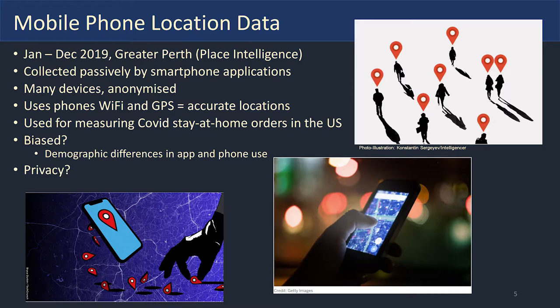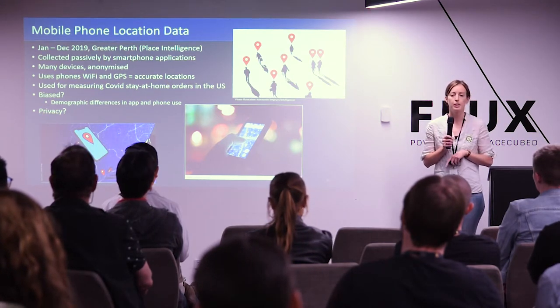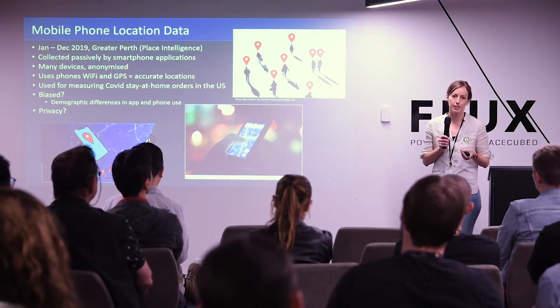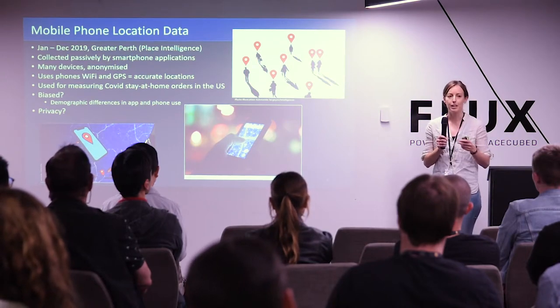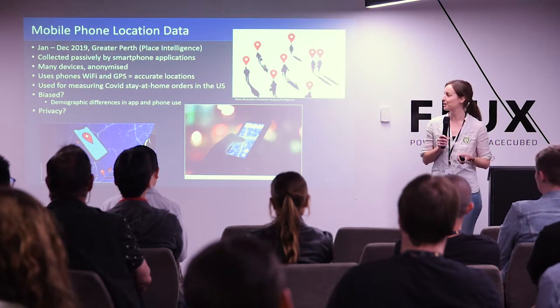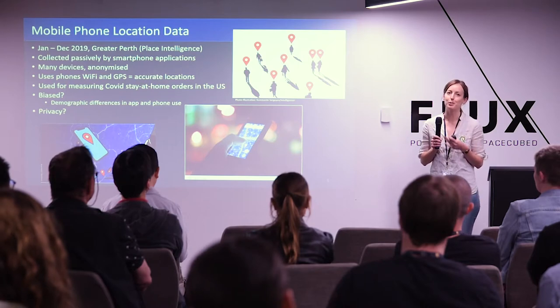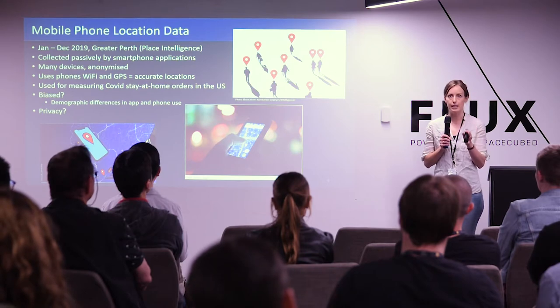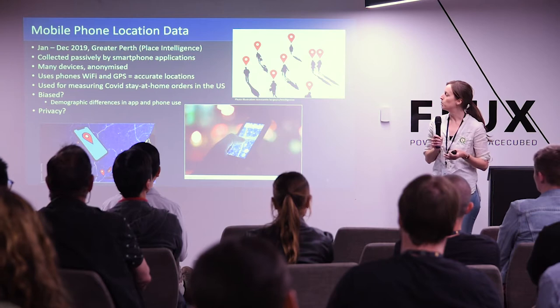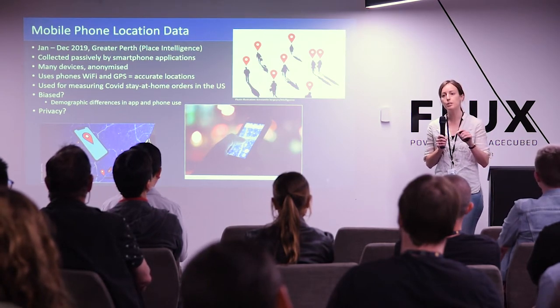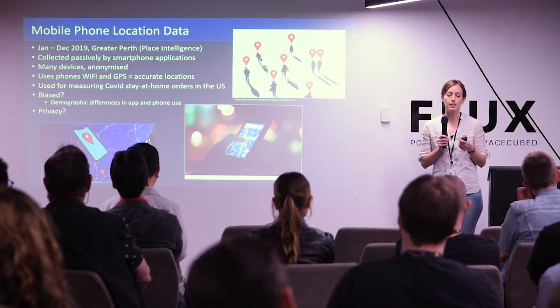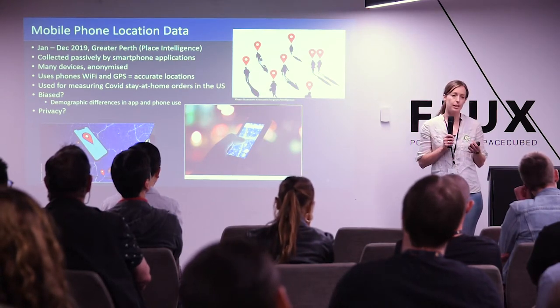We decided to address some of these challenges by using aggregated mobile phone location data, provided by Place Intelligence for the entire southwest corner. We looked at just the greater Perth region, with data from January to December 2019 — an entire year covering the entire Perth metro area. This data is collected passively by applications on your smartphone; when an app asks if it can collect your location, it's possible that app sells that data to a company that aggregates it by device ID, eventually ending up with Place Intelligence. Our dataset had quite a lot of anonymized devices — we only have device ID, location data, and horizontal accuracy data. The accuracy is quite good, using the phone's Wi-Fi and GPS. This type of data has been used by researchers measuring COVID stay-at-home orders, particularly in the US.